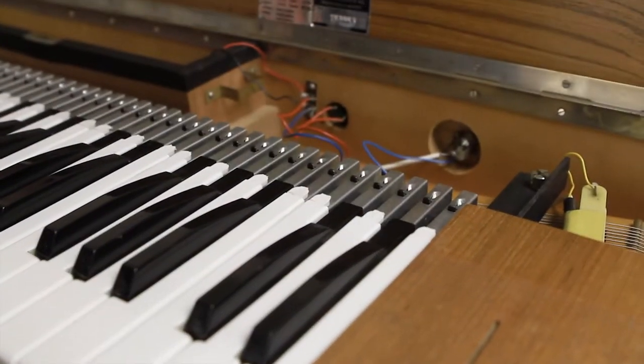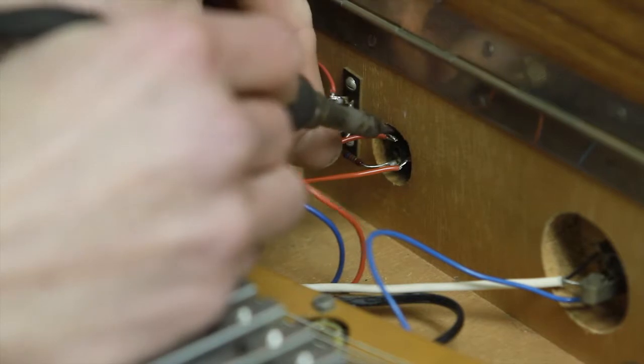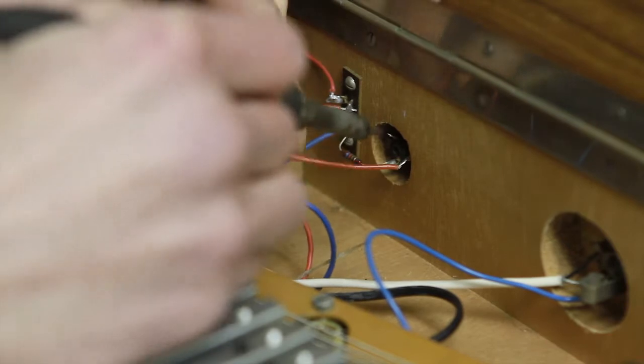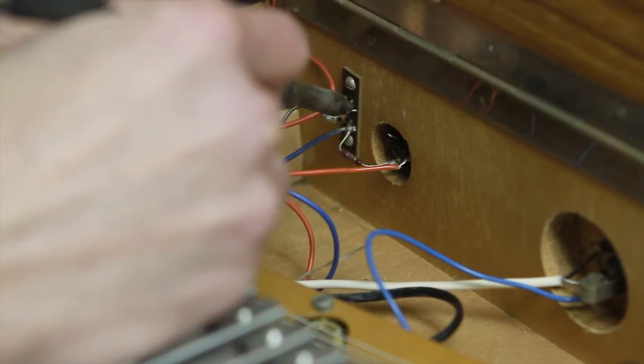The first step is going to be removing the DC jack. Desolder the red wire going from the jack to the pre-amplifier. Then from the tag board, desolder the red wire that goes to the jack.